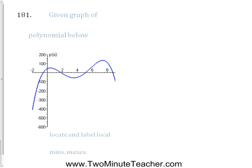Problem 181: given the graph of the polynomial below, locate and label local mins and maxes. If this was on my calculator, I could use second, calculate, maximum — go to the left side, the right side, hit enter, and it would tell me the max. But just by looking at it, I can identify a local maximum right there, and that low spot there is a local minimum. And this other high spot is another local maximum — it's generally high compared to the surrounding territory.